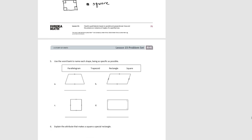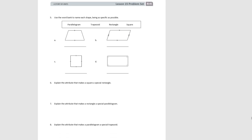Moving on, for number five you're going to match the name of the shape with its specific shape. For A, we look and we see marks showing one pair of sides is parallel. That's all we have — one set of parallel sides — so this would be a trapezoid.